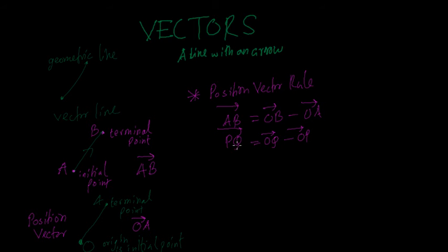All you're doing is subtracting the position vector of the starting point from the position vector of the ending point. This is also called relative position — Q relative to P means OQ minus OP. That's the idea.